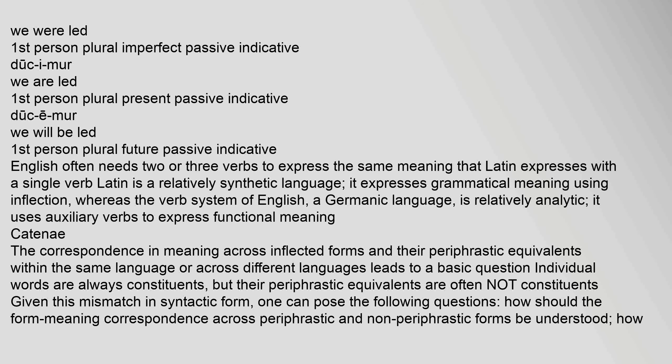Latin versus English equivalents with grammatical classification: 'ducebamur' — 'we were led' (first person plural imperfect passive indicative); 'ducimur' — 'we are led' (first person plural present passive indicative); 'ducemur' — 'we will be led' (first person plural future passive indicative). English often needs two or three verbs to express the same meaning that Latin expresses with a single verb. Latin, as a relatively synthetic language, expresses grammatical meaning using inflection, whereas the verb system of English, a Germanic language, is relatively analytic and uses auxiliary verbs to express functional meaning.